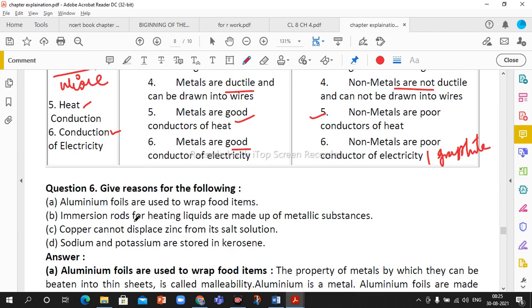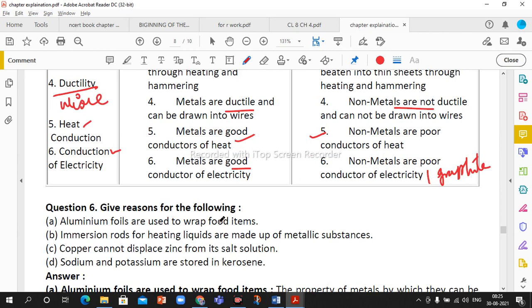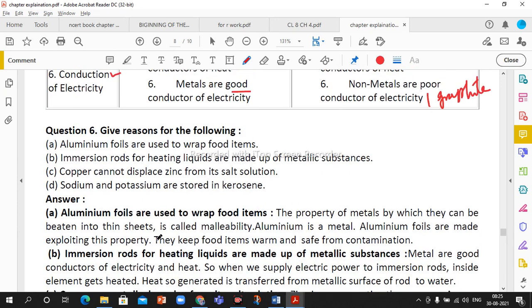Next question: give reason for the following. Aluminum foils are used to wrap food items. Why? Because the property of metal by which they can be beaten into sheet is called malleability. Aluminum is a metal and aluminum foils are made exploiting this property. They keep food items warm and safe from contamination. The right reason is it can protect the food from the atmospheric moisture or oxygen, so moisture and oxygen will not react with the food and for longer time we can keep the food warm and safe.